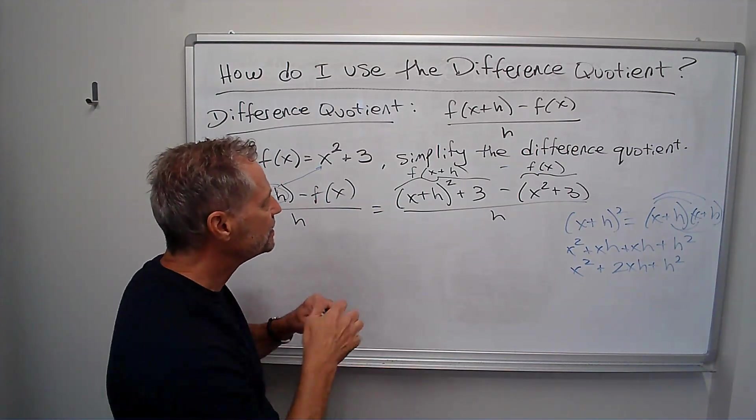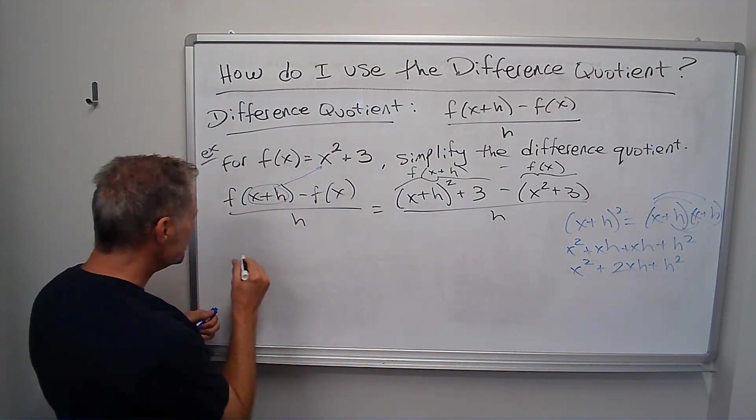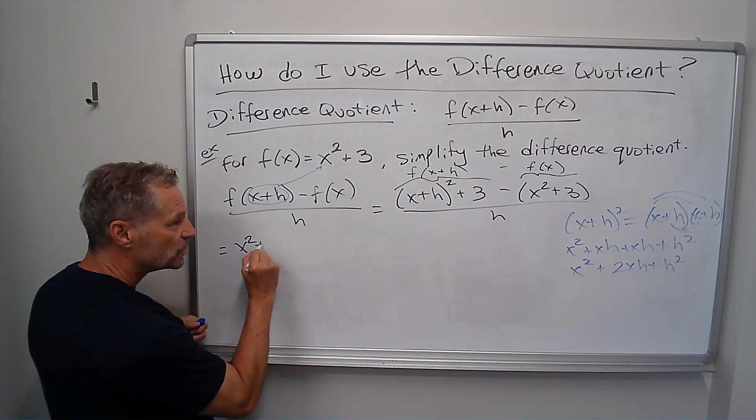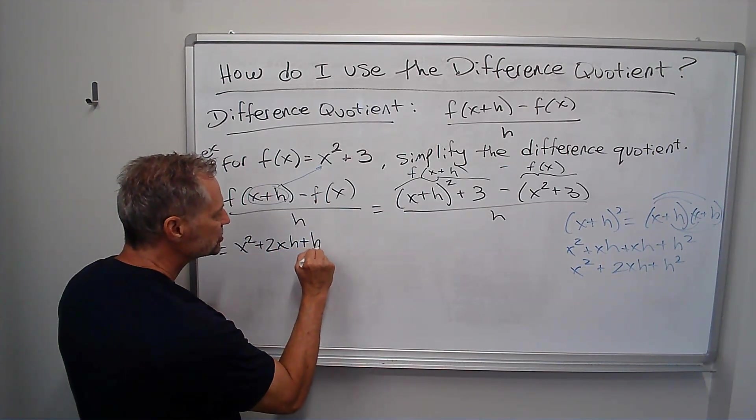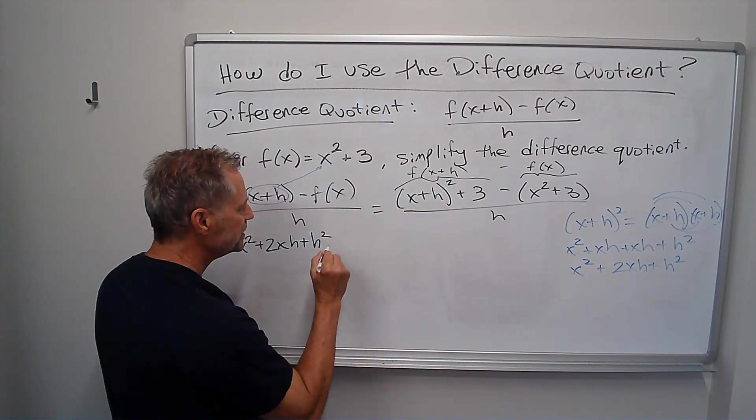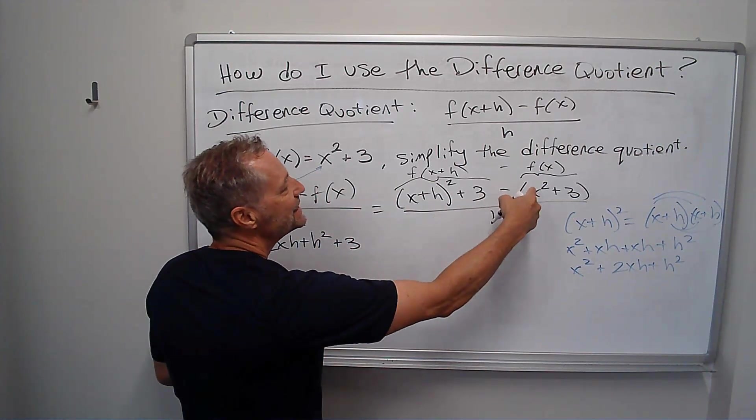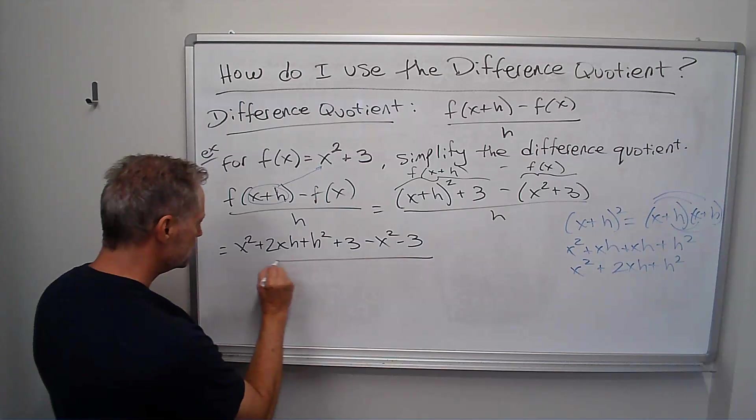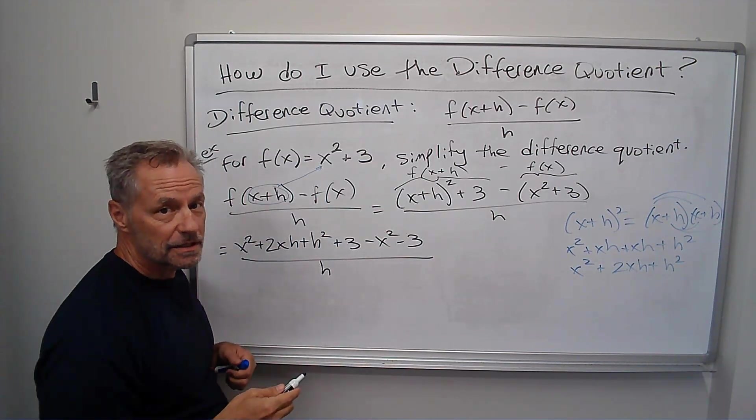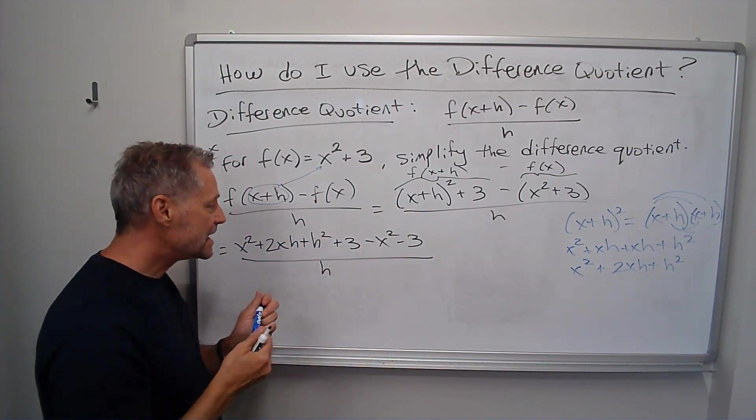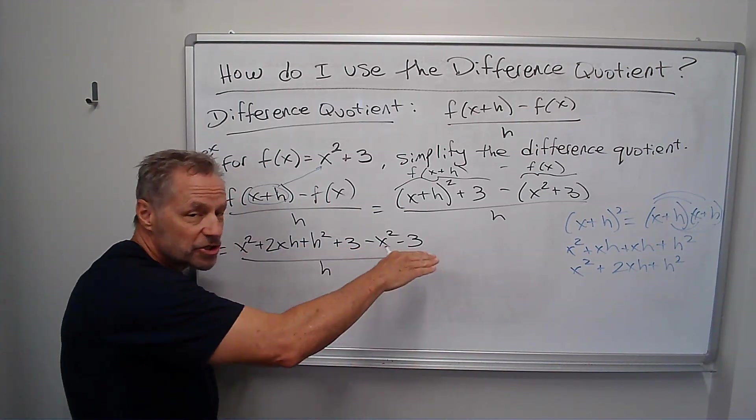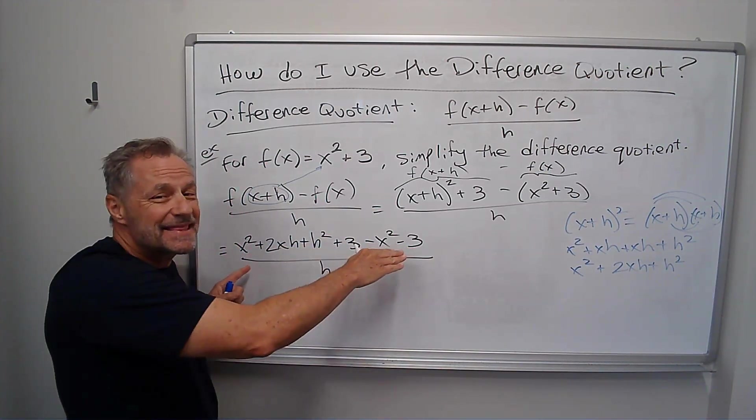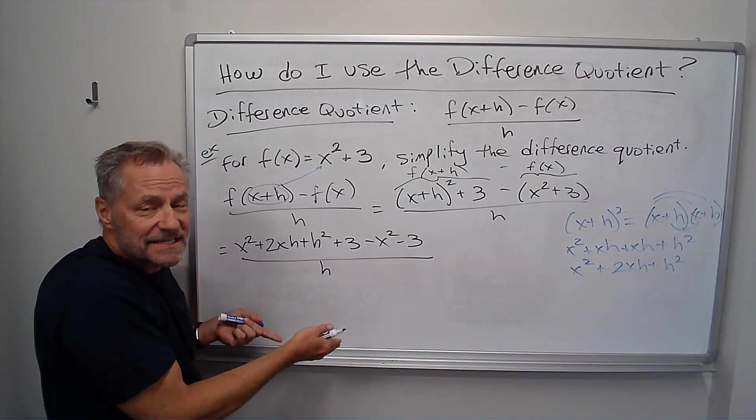So let's simplify it. So the x plus h squared comes out to x squared plus 2xh plus h squared plus 3 minus x squared minus 3. And it's all over h. Now, here's another key step for you.